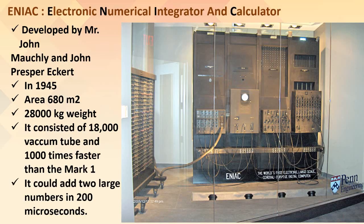ENIAC stands for Electronic Numerical Integrator and Calculator. It was developed by John Mauchly and John Presper Eckert in 1945. The machine occupied an area of 680 square meters and weighed 28,000 kg. It consisted of 18,000 vacuum tubes and was 1,000 times faster than Mark 1. ENIAC cost millions of dollars, occupied a whole room, and could perform hundreds of calculations per second.